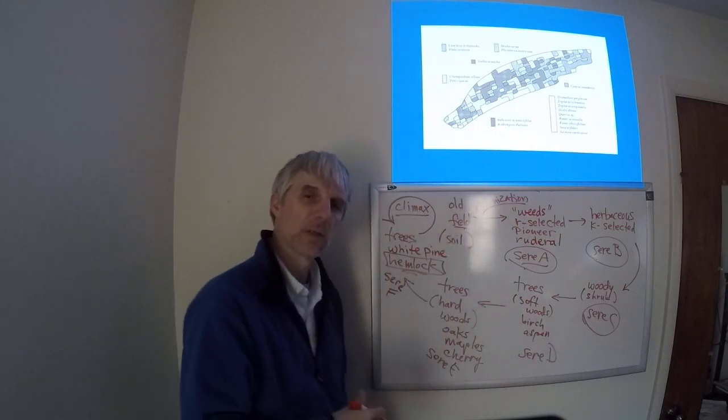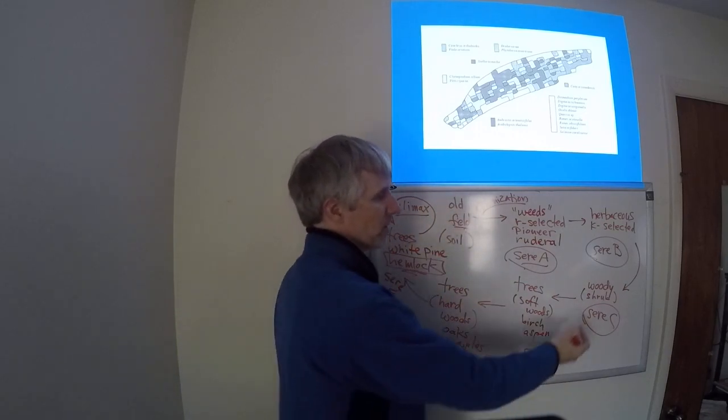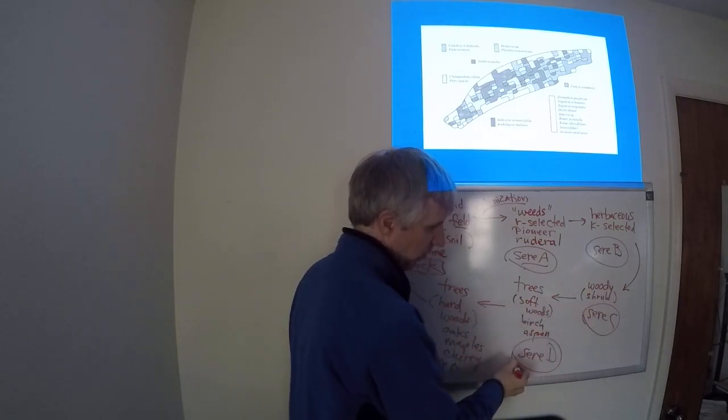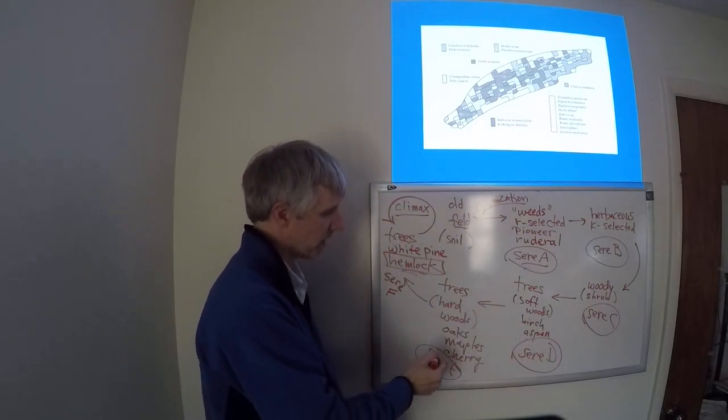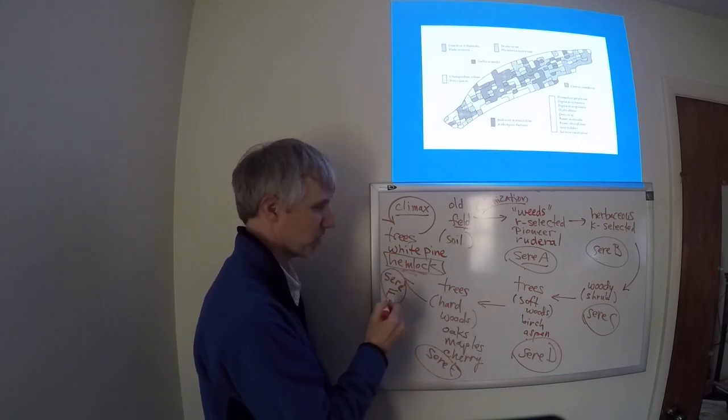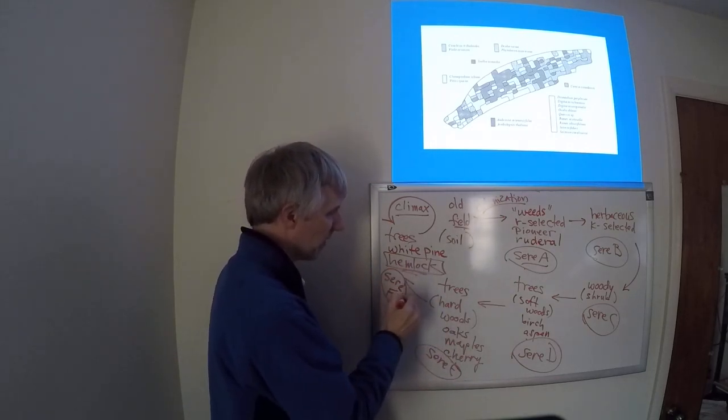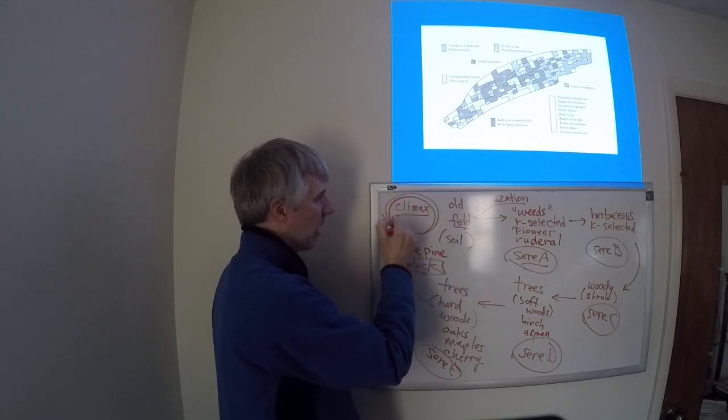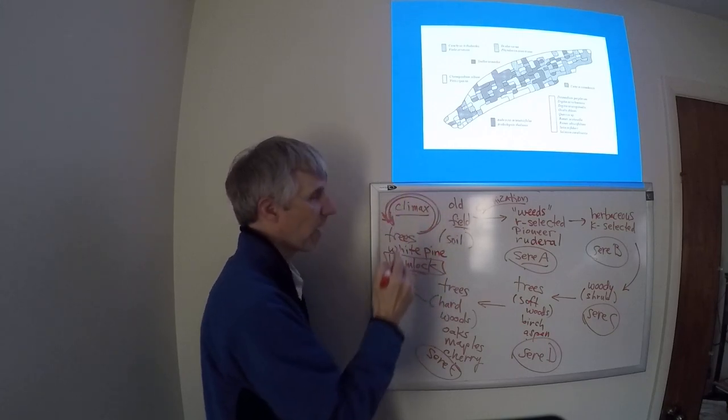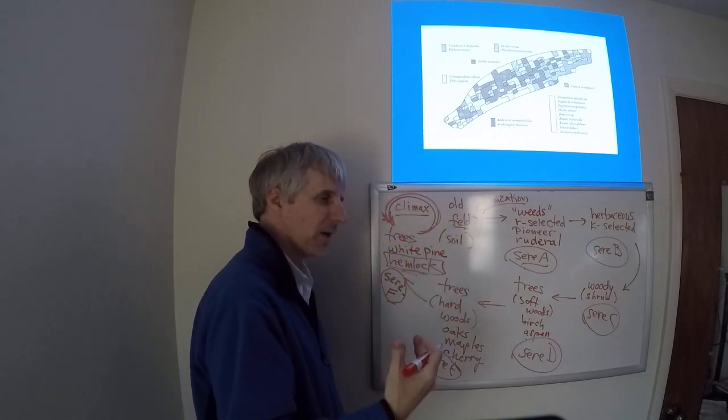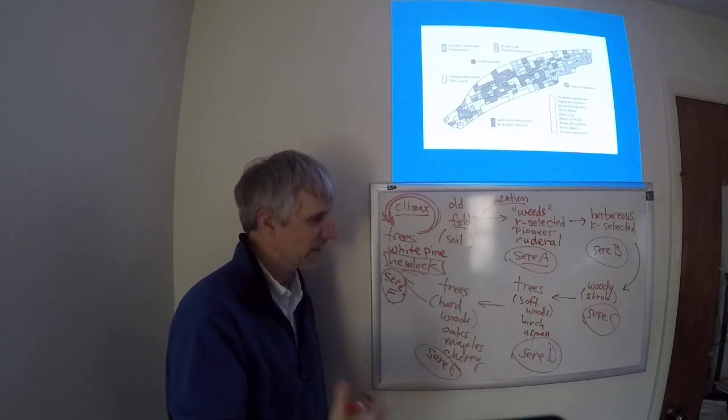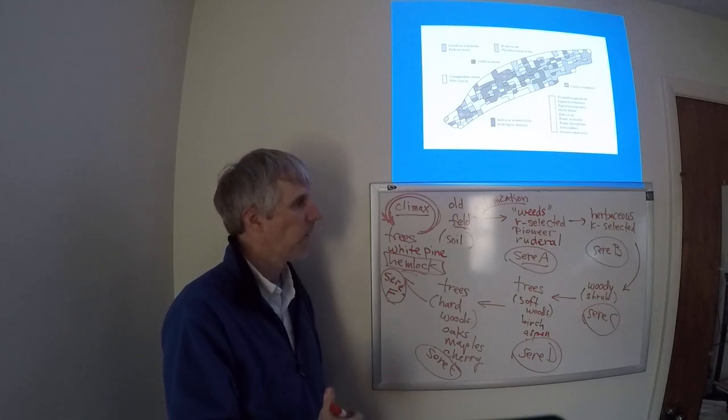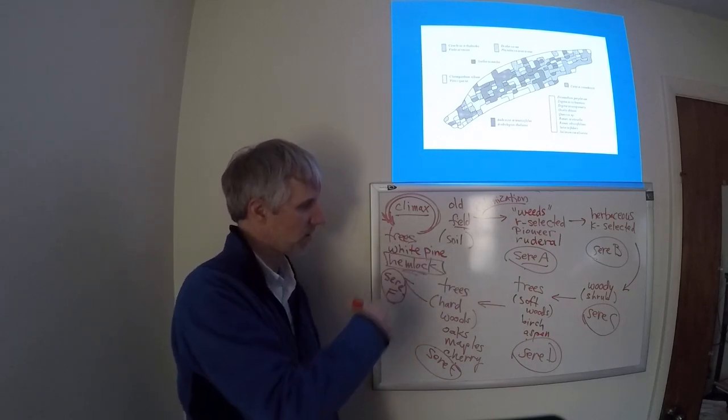These species modify the environment to support the recruitment of these species in sere B. And these modify the environment to support these species, which modify the environment to support these species, which modify the environment to support these species, which modify the environment to support these. And then these allow for kind of self-promotion or this kind of maintenance of this sere, and it doesn't go anyplace else except this sere.